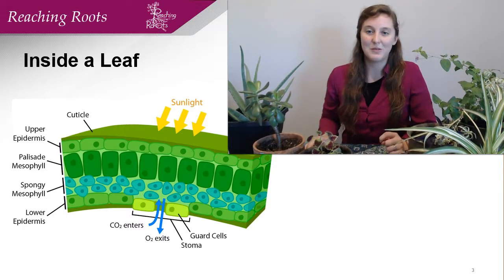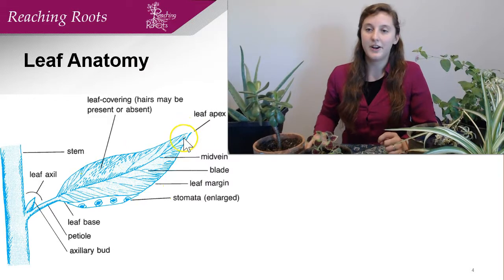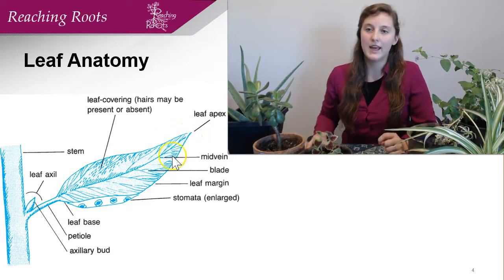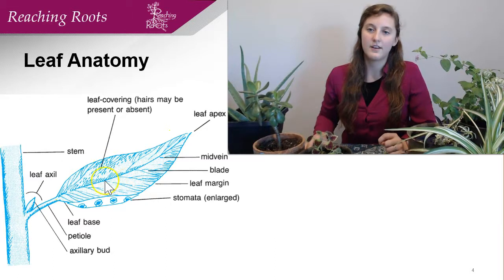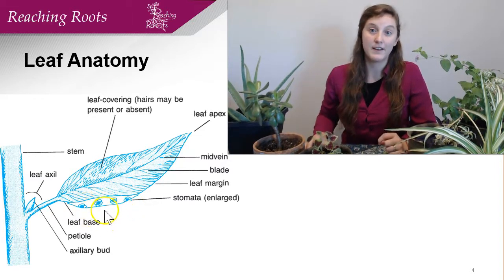So let's get into some more leaf terms. This is a diagram of a leaf. Starting at the top we have the leaf apex. Different leaves have different leaf apex shapes, so it's an important part to pay attention to. The whole area is called the leaf blade, but this main vein in here is called the mid vein, and the others are also veins. Attaching the leaf to the stem is the petiole, and on the underside of the leaf we have stomata. Stomata are not that large, but for these graphical representations they've been enlarged.